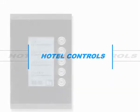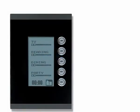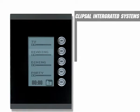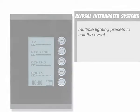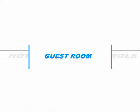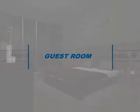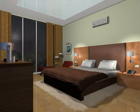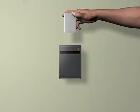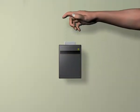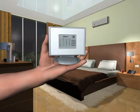Hotel controls lighting from an integrated system that can create multiple lighting presets to suit events and guest rooms. The integrated system installed in hotel rooms triggers a welcoming ambience inside the room as soon as a guest inserts the key card in its slot. A touchscreen panel by the bedside allows guests to control the room's lighting.